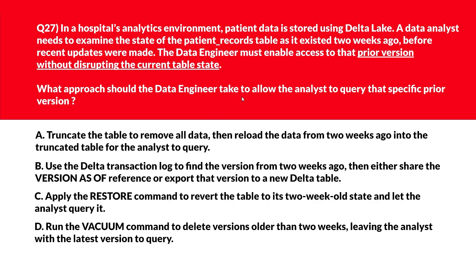All right, now let's look at this question — this is about enabling access to a prior version without disrupting the current table state. Option A says truncate the table to remove all data then reload the data from two weeks ago for the analyst to query. Truncating and reloading risks data integrity and disrupts current table state — incorrect. Option B says use the Delta transaction log to find the version from two weeks ago, then either share the version-as-of reference or export that version to a new Delta table. Version as of enables time travel without altering or overwriting the current table — let's keep this.